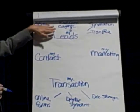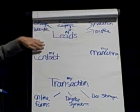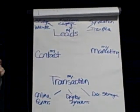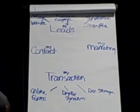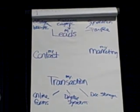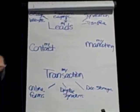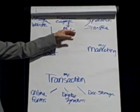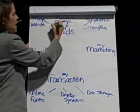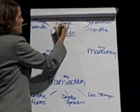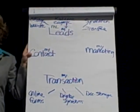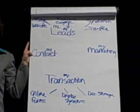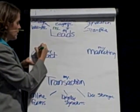So now inside eEdge we've got My Leads, My Contacts, My Marketing, and My Transactions. We've got some vendor partners here with eEdge. Which vendor runs the My Leads portion? Market Leader. I'm going to put M-L. The My Contacts piece of eEdge — who's the vendor for that? Market Leader.